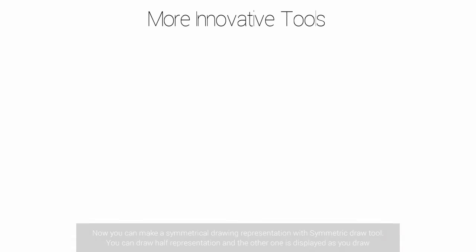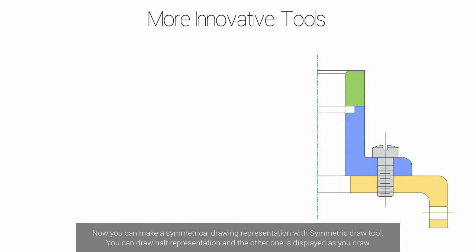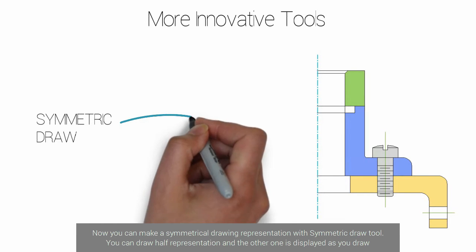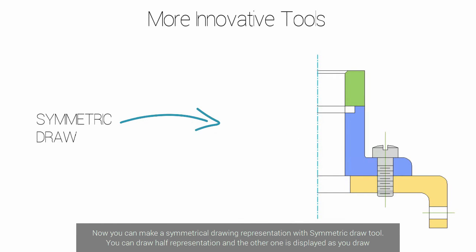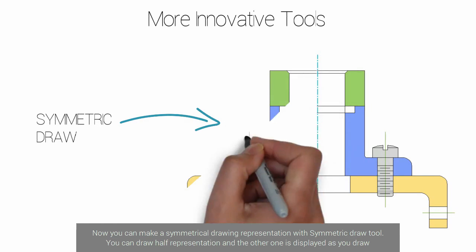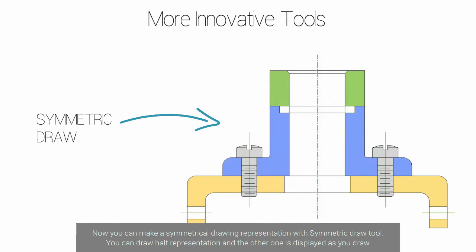GSTAR COD 2017 adds more innovative tools. Now you can make a symmetrical drawing representation with the symmetric draw tool. You can draw half a representation and the other one is displayed as you draw.